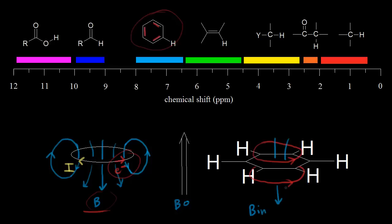As you move away from the center, we can draw some more magnetic field lines. As you get to the edge of the benzene ring, inside of the ring the magnetic field points down, but outside of the ring the magnetic field is going to point up. Same thing on this side — inside it points down, outside of the ring the magnetic field points up.